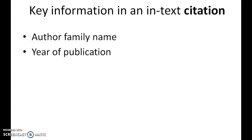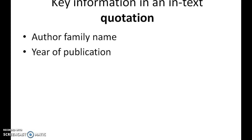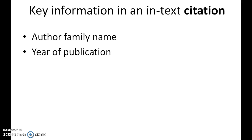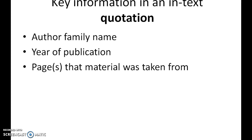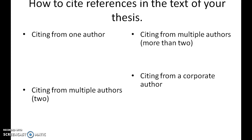You don't use the page number when citing an idea. You do however use the page number when you're quoting directly. So if you're paraphrasing it's a citation, and if you're using the material with inverted commas around it, you give the author family name, the year of publication, and also the page or pages that the material was actually taken from.